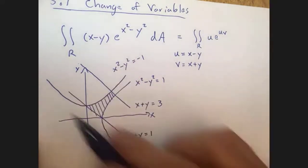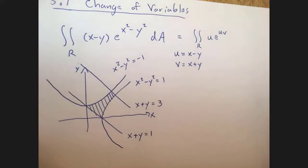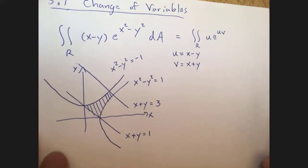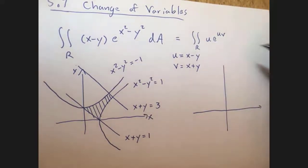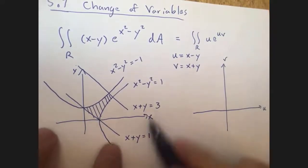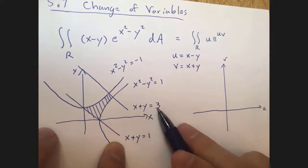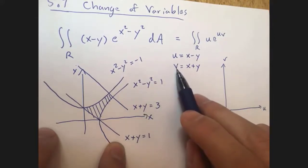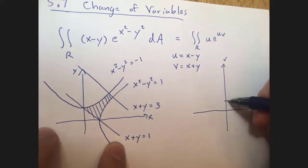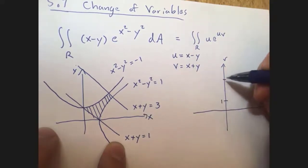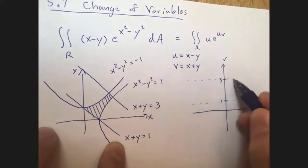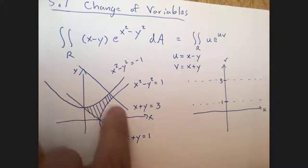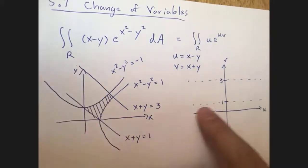But how do the new coordinates affect the region we're integrating over? Hopefully they make that nice too. In the uv coordinates, x plus y went from 1 to 3, but x plus y is what I'm calling v. So v goes from 1 to 3, meaning these two diagonal lines become two horizontal lines v equals 1 and v equals 3.